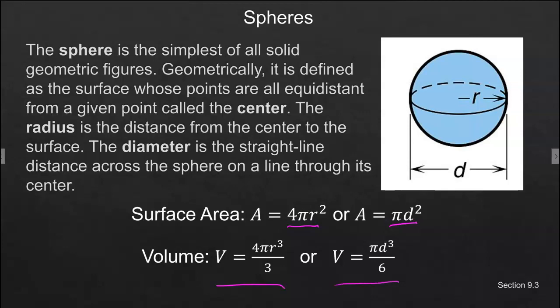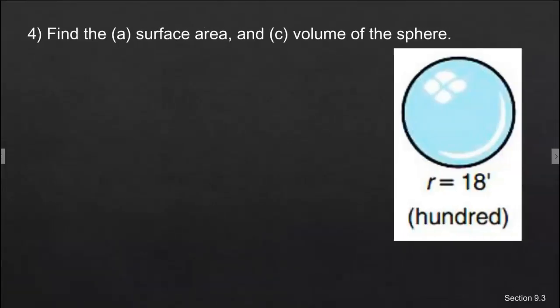This explains what it is for it to be a sphere. It just looks like a ball. It has a radius, it has a diameter. The radius is from the center of the sphere to a point on the outside, and then the diameter would be all the way across going through the center.